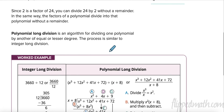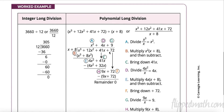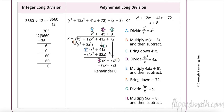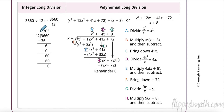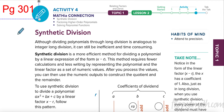Dividing polynomials — one way to do it is called long division, just like you did back in the day. You put the dividend inside, the divisor outside, and the quotient goes up top. You ask: what do I multiply x by to get x to the third? You'd multiply x squared. It's a long drawn-out process and it does work, but I think there's a better way — and that's on page 301.